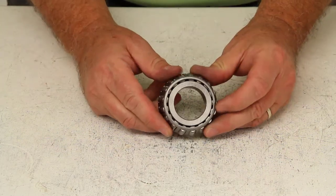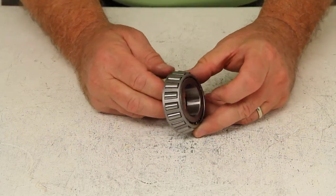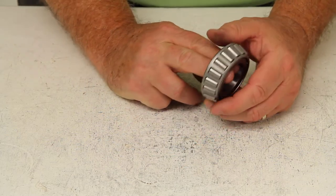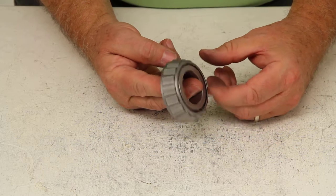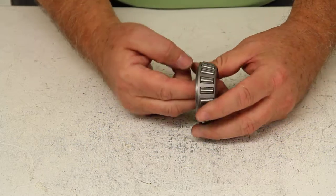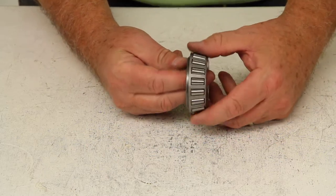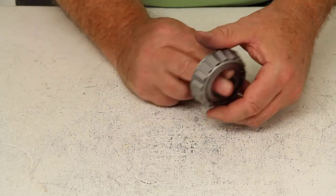Today we're going to review part number 14125A. This is a TruRide replacement trailer wheel bearing. This is an outer wheel bearing. These replacement bearings are high quality tapered roller bearings designed for high speed use.